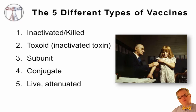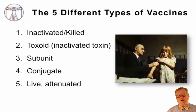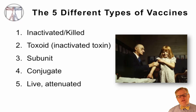There are five different types of vaccines. These include vaccines that are inactivated or killed, vaccines that are toxoids which are inactivated toxins, third are subunit vaccines, fourth conjugated vaccines, and fifth live attenuated vaccines. We're going to go through each one of these in succession.